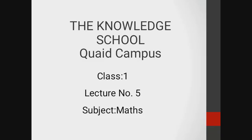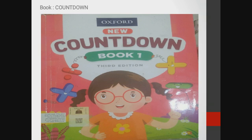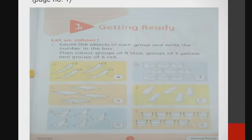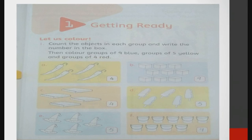We are going to have our fifth lecture of class one, subject maths. Open your countdown book for class one. Today we will do page number one — getting ready. We had a previous lecture but we will revise this. The activity is coloring and counting. First we will read the statement: count the objects in each group and write the number in the box.